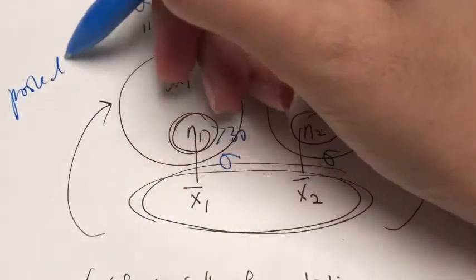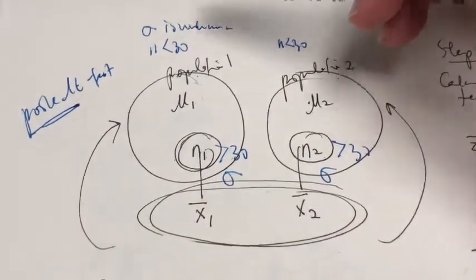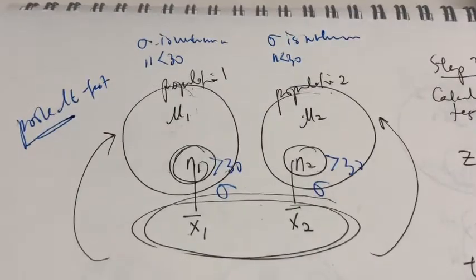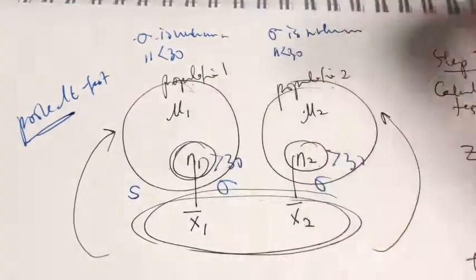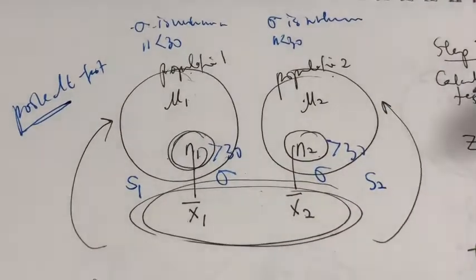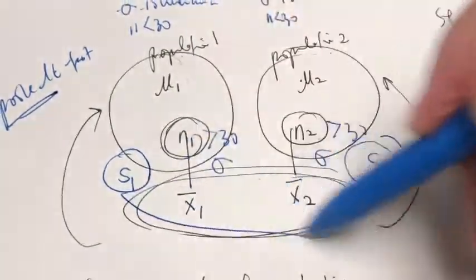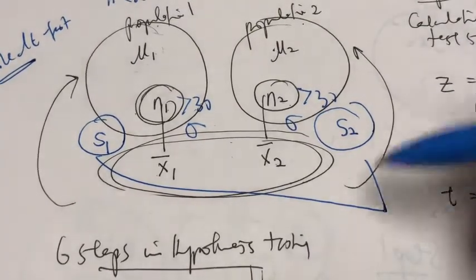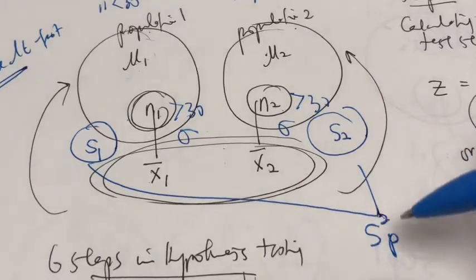You may be wondering why the word 'pooled' here. We don't know what sigma is — sigma is unknown for both populations. But we've learned from previous chapters that if we don't know sigma, we can use its best estimate, which is the sample standard deviation. So here we can get the sample standard deviation from sample 1, and also the sample standard deviation from sample 2. What we're going to do is pool these two together and come up with a single estimate called the pooled sample variance, written as S²p.